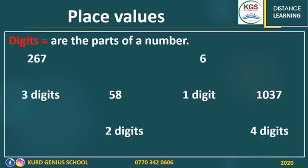The first thing that I want to talk about is digits. What are digits and what does digit mean? Digits are the parts of a number and they can be any number from 0 to 9. Look at number 6. How many parts or how many digits are in this number? There is only one part or one digit to this number, and it is just 6.